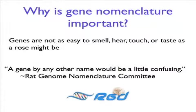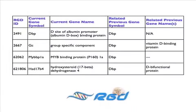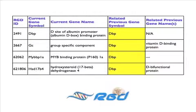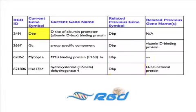This means that in the case of genes, a gene by any other name might be a little confusing. For example, there are four rat genes listed in this table. Only one of them has the official symbol DBP. However, at some point in time, all of the genes have been identified by the symbol DBP. That creates a fair amount of confusion, especially with automated searches of the biomedical literature.